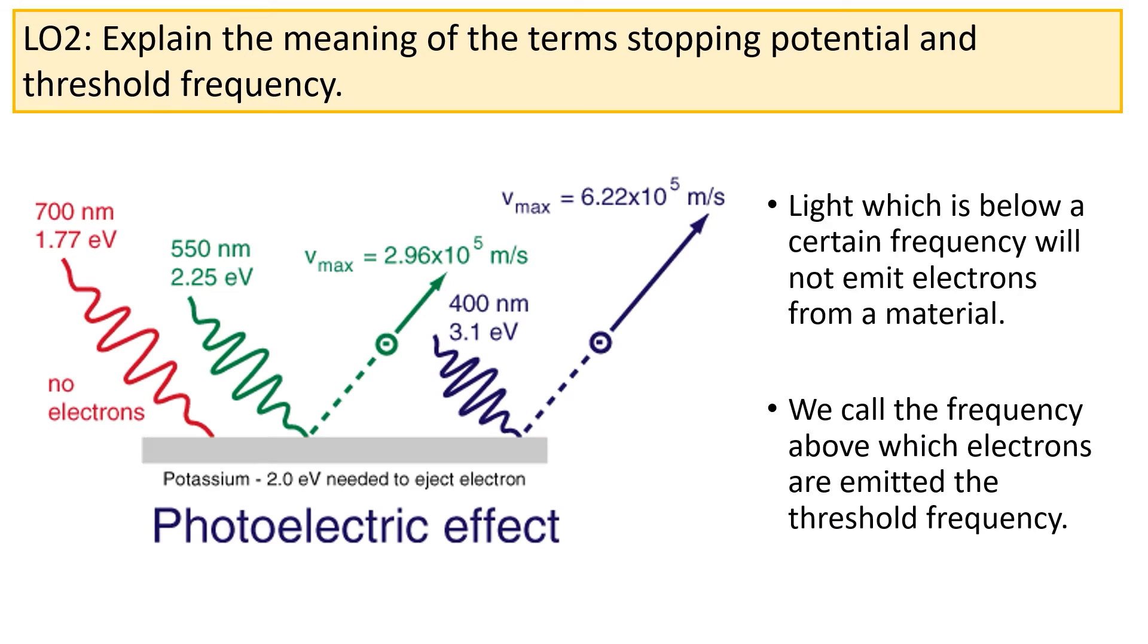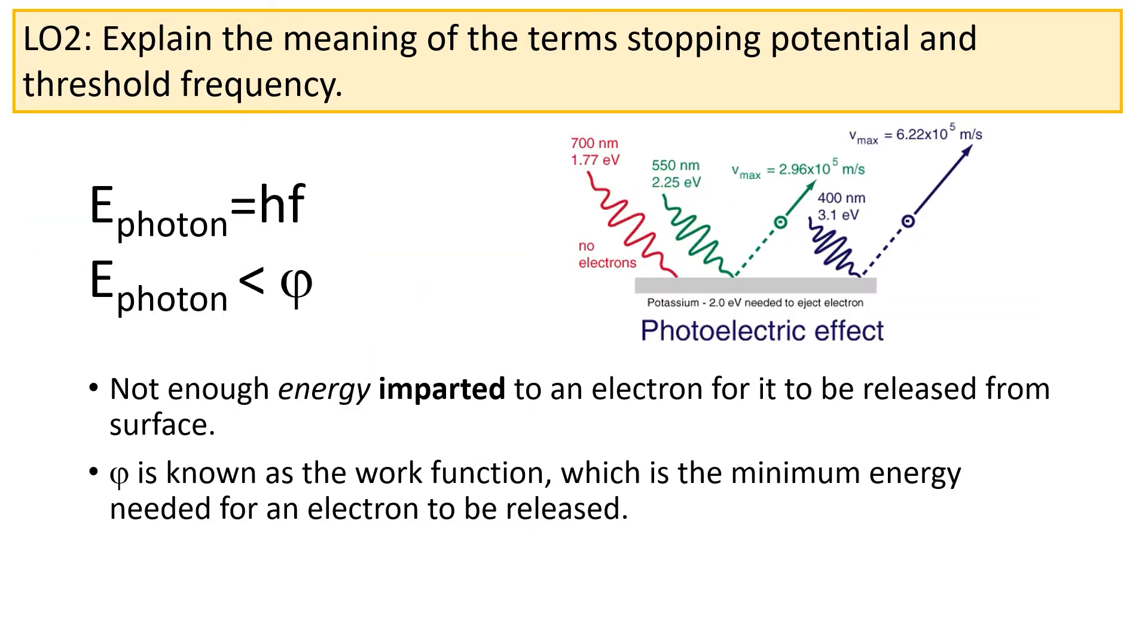There are several important observations we should make about the photoelectric effect. The first is that light below a certain frequency will not cause electrons to be emitted from a material. Let's take an example. If we shine red light, which has a relatively low frequency at potassium, no electrons will be emitted from the surface. However, if we take higher frequency light, such as green light or blue light, electrons will be emitted from the surface. This was very important as it led to the idea that light was behaving like a particle rather than a wave in the photoelectric effect.